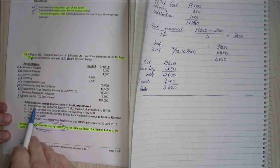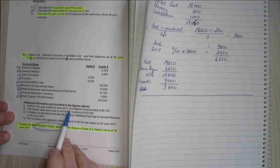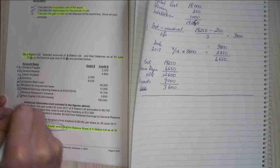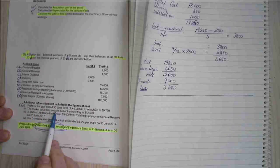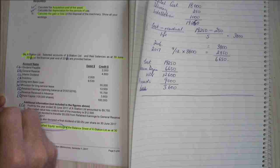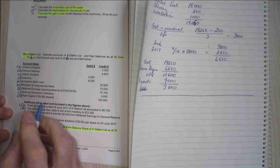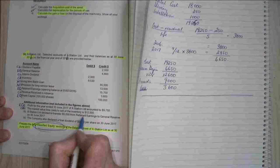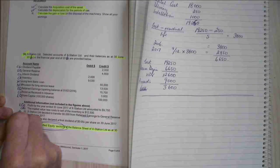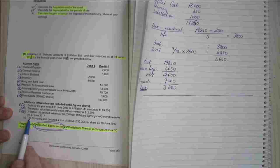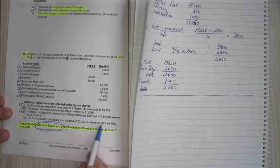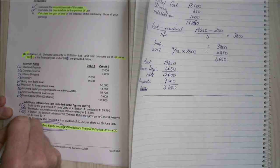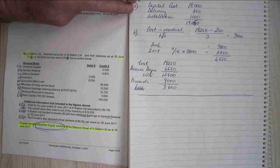Let's have a look at my additional information. It says profit for the year ended 30th of June amounted to $9,750. Well I know my profit ends up in my equity, so it's going to be equity. The market value less cost to sell the inventory is $12,500, well that's current assets so I don't have to worry about that. So X station decided to transfer $5,000 from retained earnings to general reserves, well that's equity and that's equity, so that's going to be part of my equity calculation. And the company also declared a final dividend of $0.05 per share on the 30th of June 2017. And I know that dividends get paid out of retained earnings, which is part of equity.